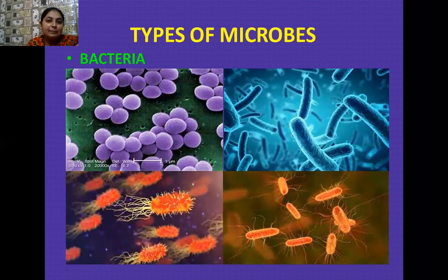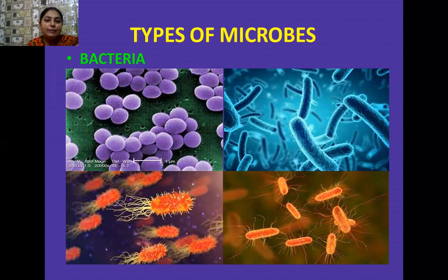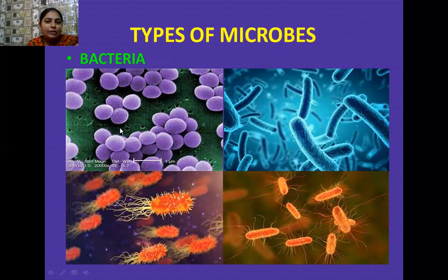Various types of microorganisms can be categorized as bacteria, viruses, fungi, and other microbes. Bacteria differ according to their shape — they may be coccus type, spirillum, vibrio type, or rod-shaped bacteria. According to their shapes, we have named these bacteria.